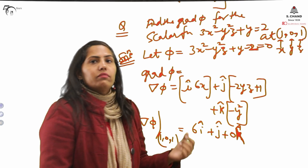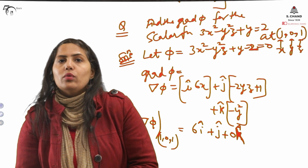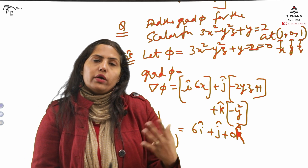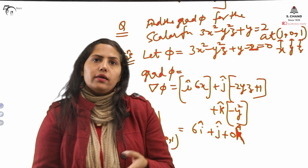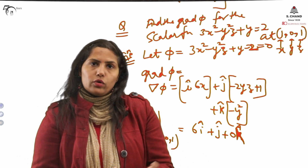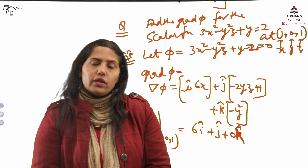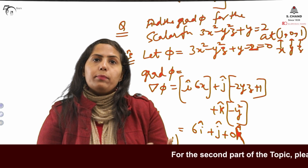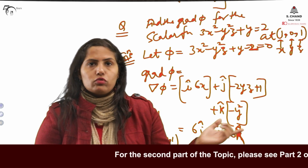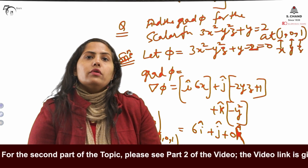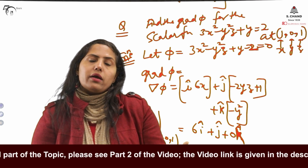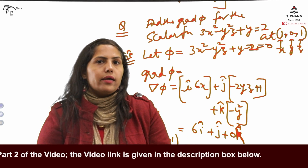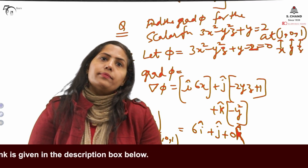So we have learned in Part 1: what is gradient, how to find the gradient of a particular scalar function, and how to find grad phi at a particular point. In Part 2, we will be covering normal line, tangent plane, and tangent line.